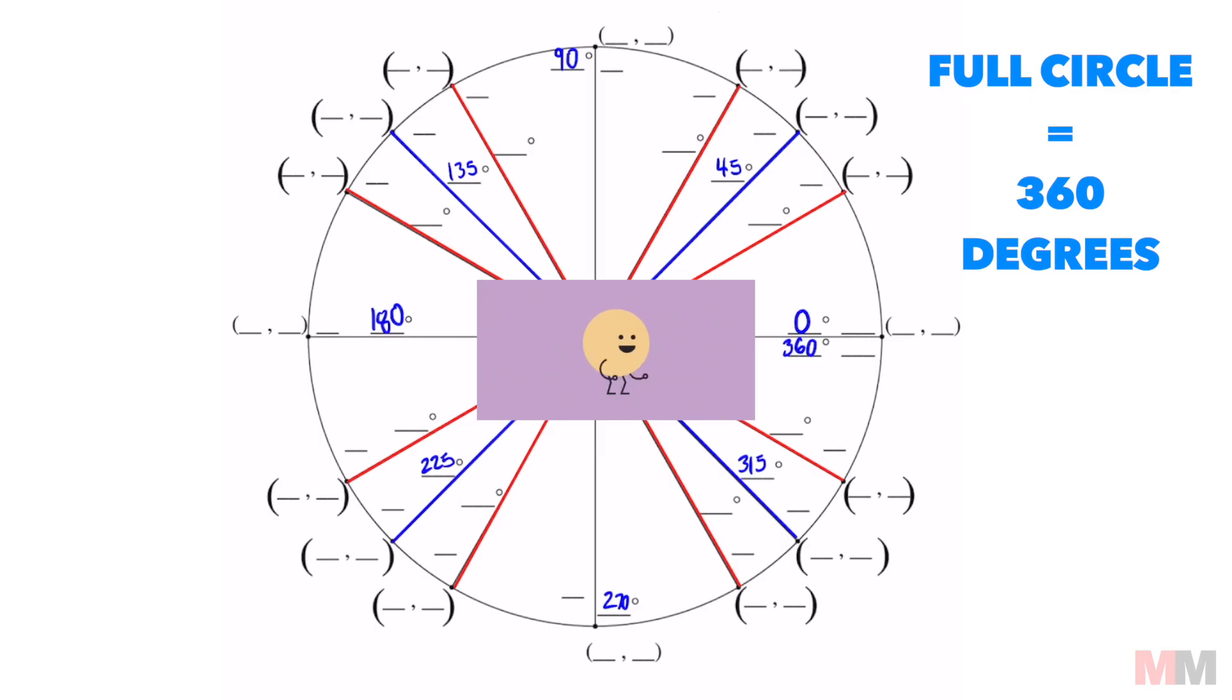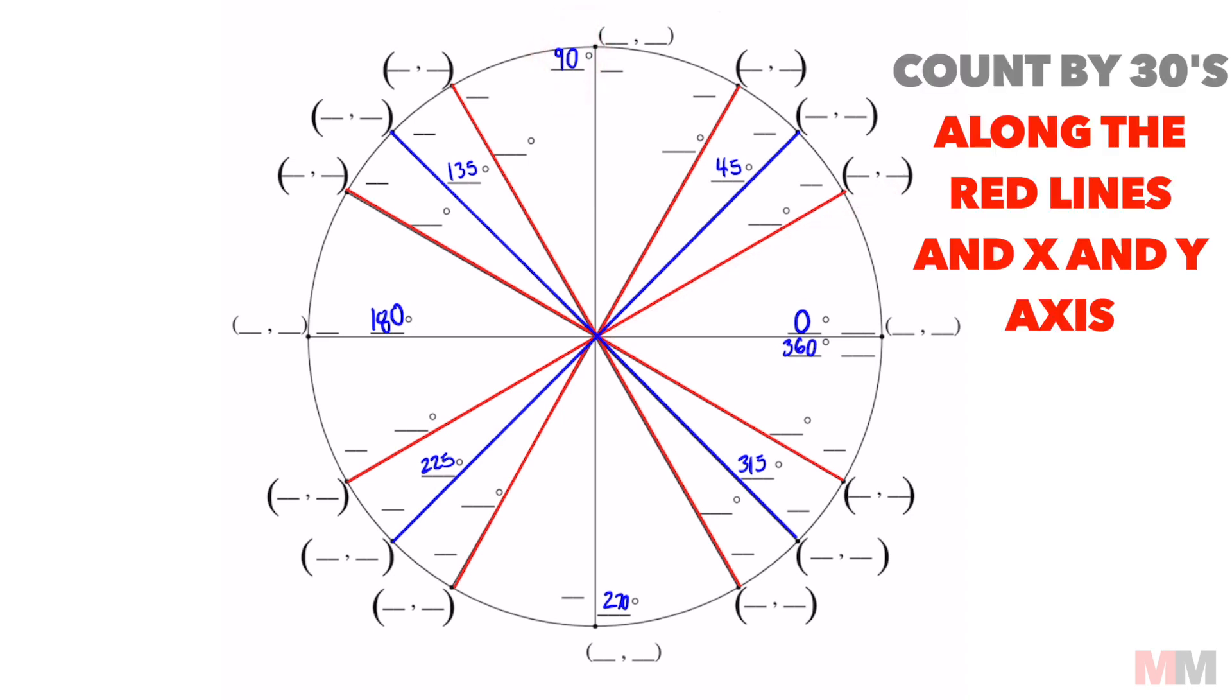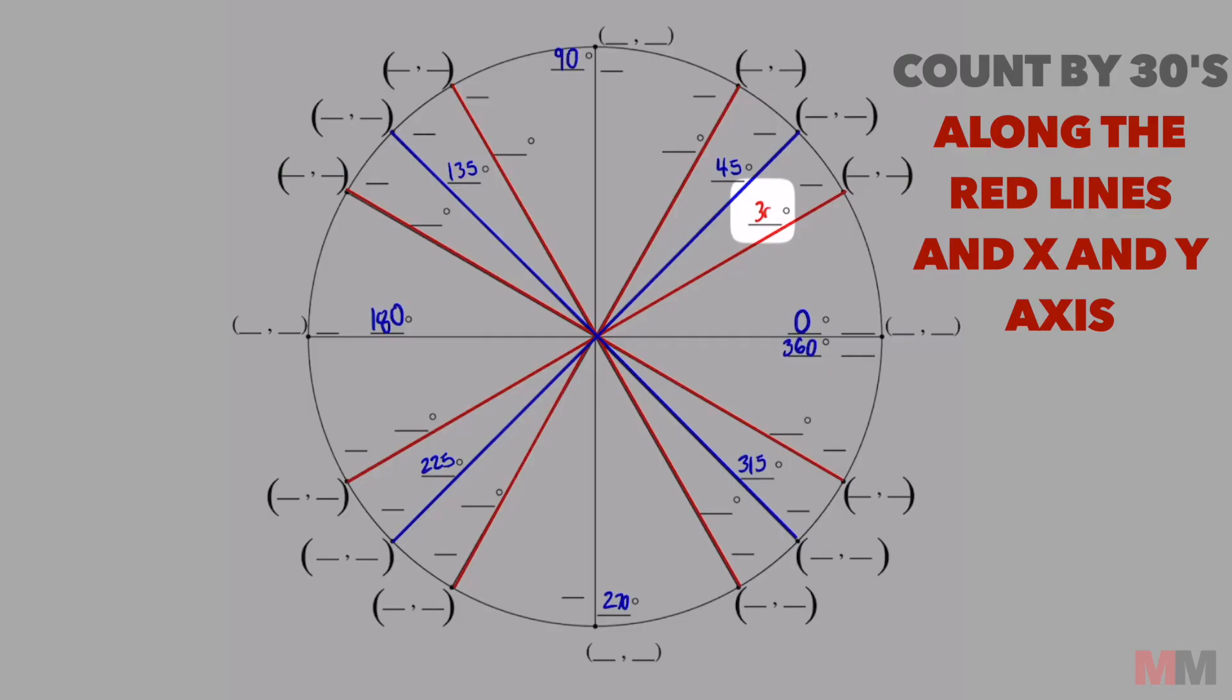So similar pattern that we're doing. The red lines are one-third of 90 degrees. And one-third of 90 is 30. So we just have to count by 30s for the red lines. 30. 60.